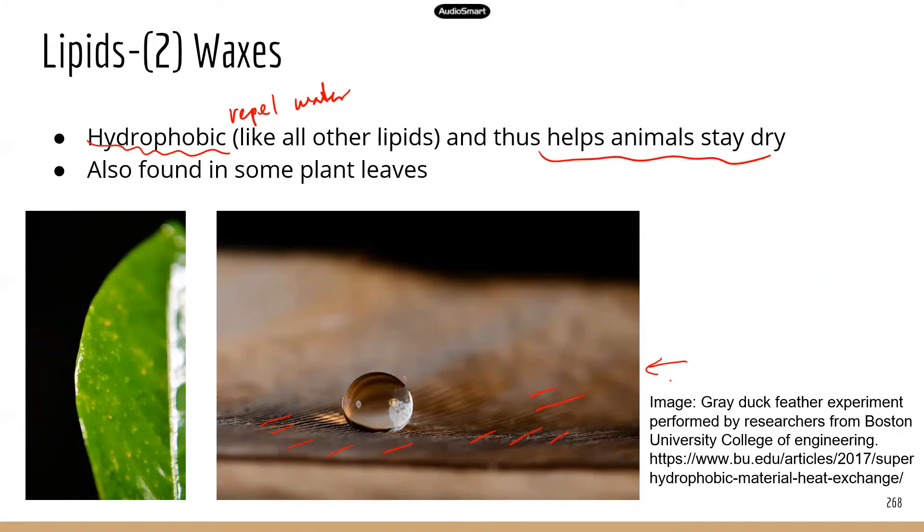Instead, it's going to stay on its own, because the wax layer on the feather repels the water, so water couldn't penetrate. It will just stay on the surface, and then the feather stays dry. And when the animal shakes, then the water will just come off.